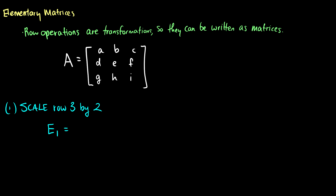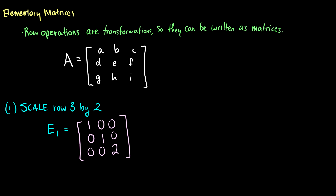So for instance, if I give you a 3 by 3 matrix A with entries A, B, C, D, E, F, G, H, I, I can write a matrix that scales the third row by 2. If you remember the identity matrix — it has 1s in its diagonals and 0s in the rest — this just takes 1 of each row and returns it. So if I want to scale the third row by 2, I just take the last diagonal entry and make it a 2.